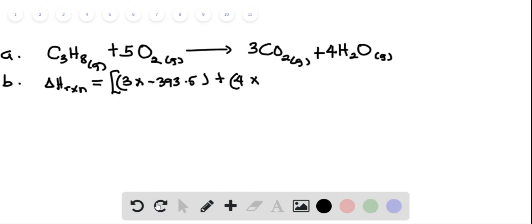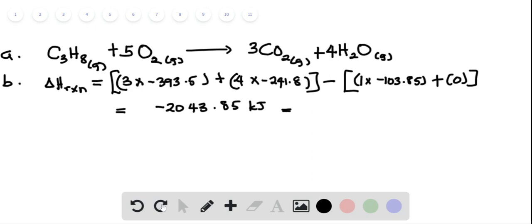Minus the reactants, so that's one times -103.85 plus zero because oxygen is zero. All these together will give us -2043.85 kilojoules, which is the same thing as -2.043 × 10^3 kilojoules.